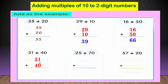another question: 31 plus 40. ادي الـ 31 وادي الـ 40. 1 plus 0 equal 1. 3 plus 4 equal 7. يبقى الانسر 71. another question: 25 plus 70. ادي الـ 25 وادي الـ 70. we begin with the ones - الـ ones مع الـ ones والـ tens مع الـ tens.